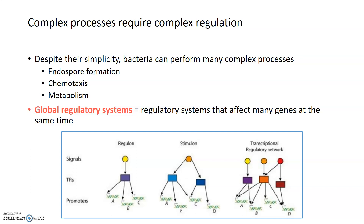There are specific regulatory systems, known as global regulatory systems, that can affect many genes at the same time and change the expression of multiple genes with one signal. Some examples of global regulatory systems include the regulon, where one signal in yellow can act on one receptor, and then trigger changes in transcription of several different genes by affecting several different promoters, labeled A, B, and C.